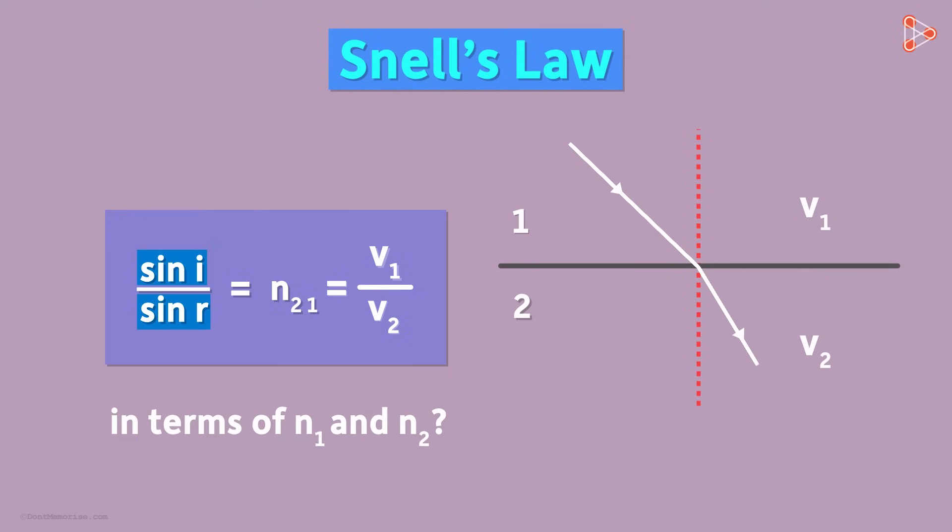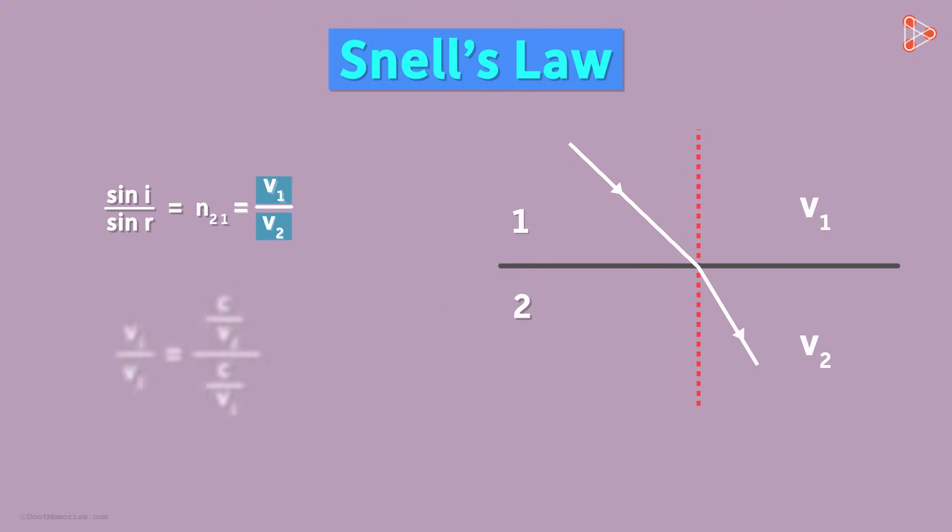Yes we can. We just use some very basic math. We can write this ratio like this, where C is the speed of light in vacuum. Yes! If you simplify this ratio, we will get V1 over V2. And can you guess what the numerator and the denominator are equal to?